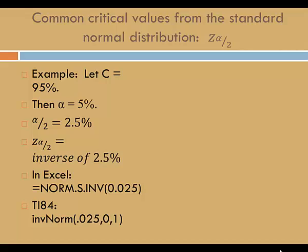Alpha over 2 is 2.5%. We need to find z of alpha over 2, the inverse of 2.5%. Again, we can use either Excel or TI-84. Either way, z of alpha over 2 is 1.96.